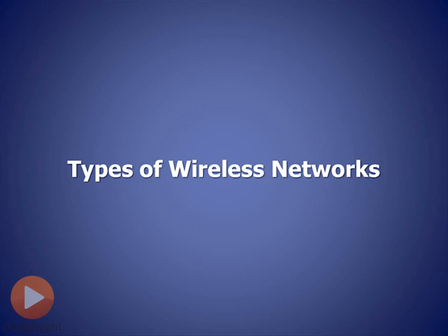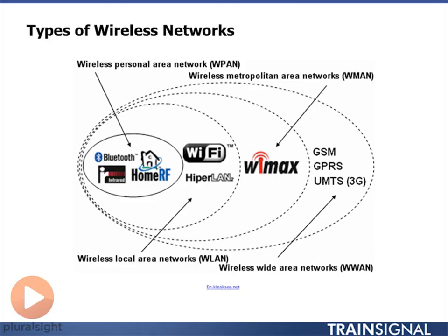In this first part, I want to give you the industry definitions for the different types of wireless networks. In this graph, we're giving you the different terms that are used. The circles or ovals in the middle are really defining coverage. For a personal area network, we're talking about things that are in your close proximity — things like between your cell phone and your earpiece — that would be an example of a wireless personal area network.